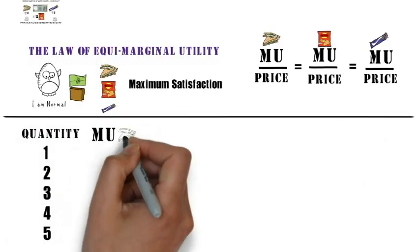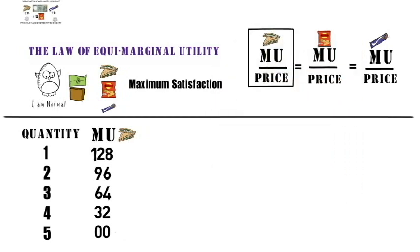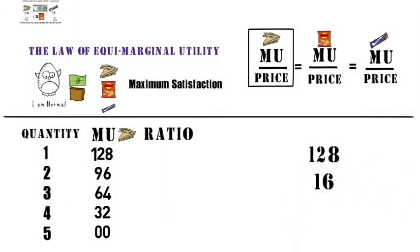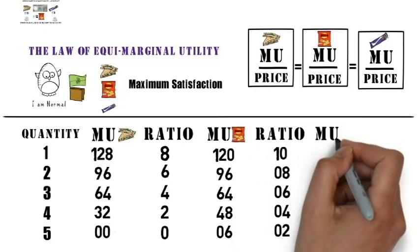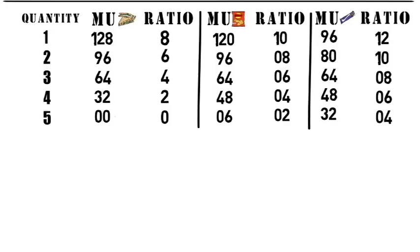Let's assume that you are given the marginal utilities your friend derives from additional units of sandwich. When your friend eats the first sandwich, he gets 128 units of utility. From the second sandwich, his utility decreases to 96 units, and so on. To find the ratio, we apply the formula: marginal utility divided by price. The price of the sandwich is Rs.16 and the marginal utility from the first sandwich is 128, so the ratio translates to 8. Similarly, let's say we have the data for marginal utilities of chips and chocolates as well. If possible, pause the video and try to understand the schedule first, so that it's easier to grasp what's next.